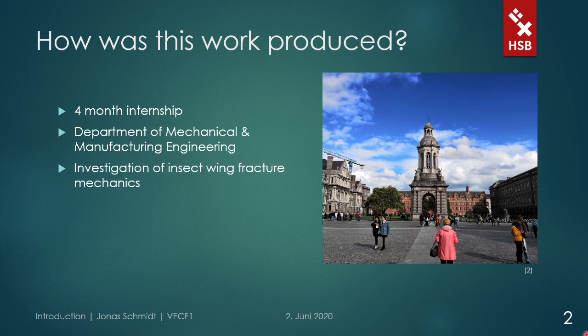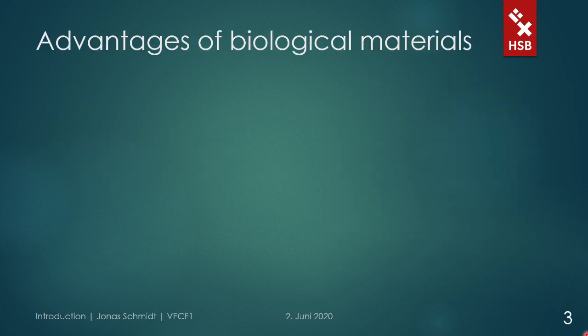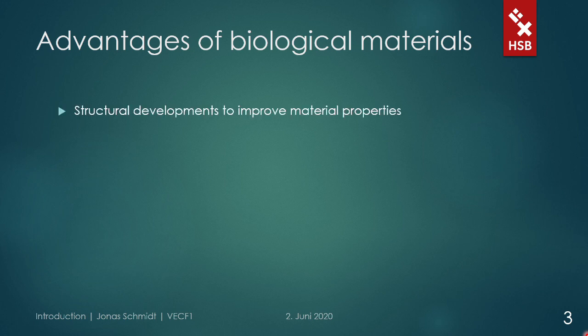As an engineer, you might wonder why someone would look at what at first sight seems quite weak material, if you have these thin wing membranes in mind. To clear these concerns, I would like to begin with a look at the general advantages of biological materials. In contrast to engineering applications, there is no possibility in nature to use high-performance materials like metals. That is why, over the course of evolution, interesting adaptations have evolved to increase the properties of biological structures. Many organisms possess healing abilities or have, like wood or bone, hierarchical structures that improve their material properties above the level of a single component.